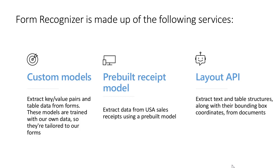The second capability of Form Recognizer is the pre-built receipt model. This functionality works only with receipts in the United States, at the moment of recording this video, and allows you to extract data from receipts. The last capability is the Layout API, which enables you to extract text data and table data from forms together with bounding box coordinates. This can also be interesting for some use cases.